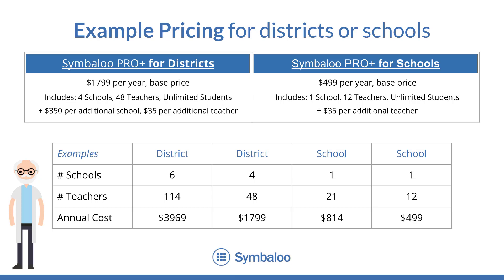Here's a breakdown of how Symbaloo Pro Plus pricing works for schools and districts. Pricing for districts begins at $1,799 per year and includes Symbaloo workspaces for one district, four schools, 48 teachers, and an unlimited number of students. If your district would like to connect more than four schools or 48 teachers, the cost for each additional school workspace is $350 per year and each additional teacher workspace is $35 per year.